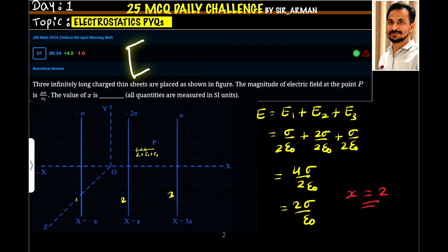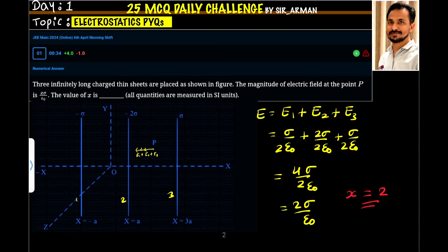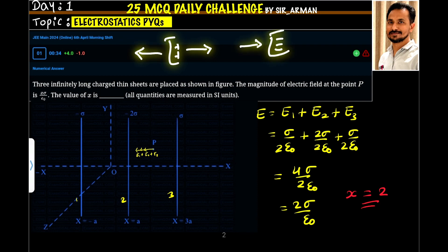Let us assume we have a plate whose charge density is sigma. Then the electric field at any point is given by sigma by 2 epsilon naught, which is independent of distance r. If we have a positively charged plate, the electric field points away from it, and if we have a negatively charged plate, the electric field will point towards the plate.